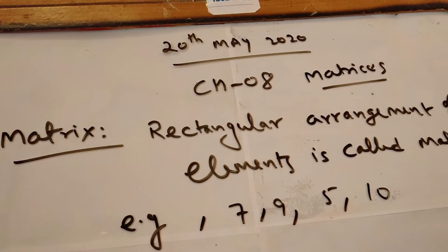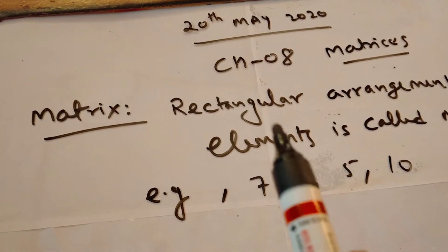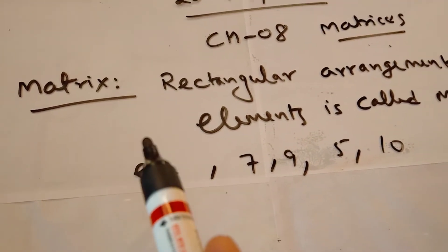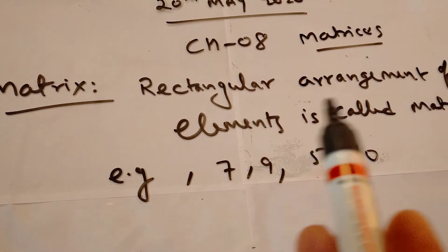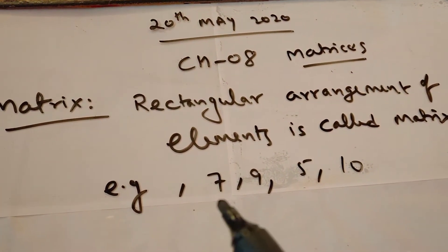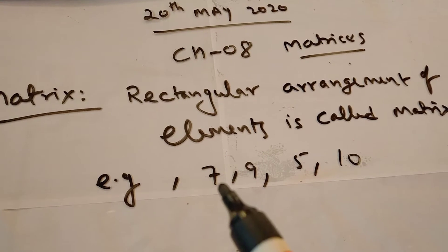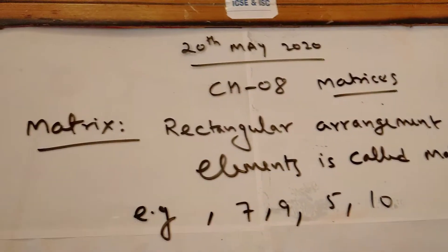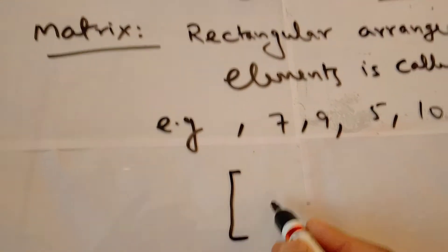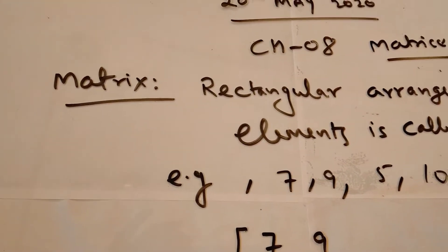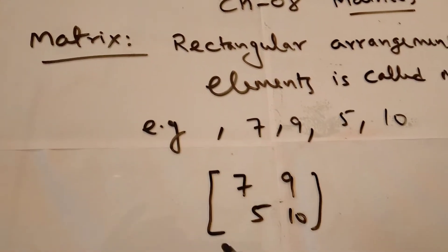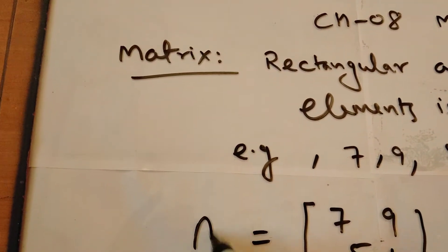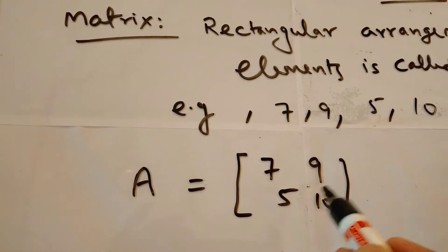Good morning students. This video is for Class 10 students. Today we are going to start Chapter 8: Matrices. First of all, I want to define the matrix. A matrix is a rectangular arrangement of elements. For example, we have elements 7, 9, 5, and 10, arranged in rectangular form like this. This format is called a matrix. A matrix is always denoted with capital letters.